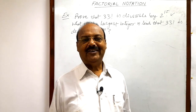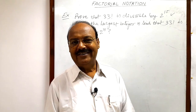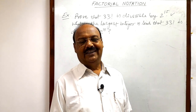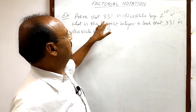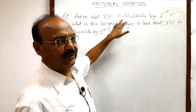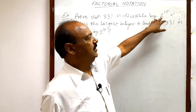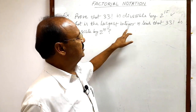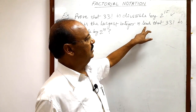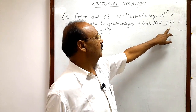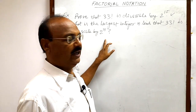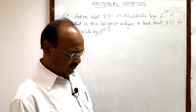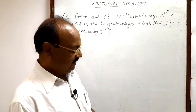Welcome students. Today we are going to discuss a very interesting question from the topic factorial notation. Here the question is: prove that 33 factorial is divisible by 2 to the power 15. What is the largest integer n such that 33 factorial is divisible by 2 to the power n? Now let us see the solution.